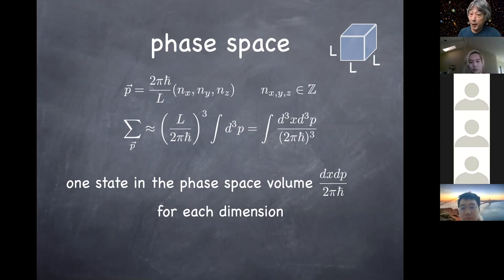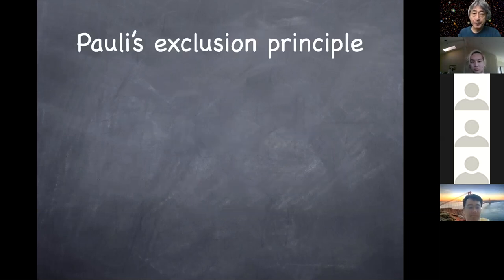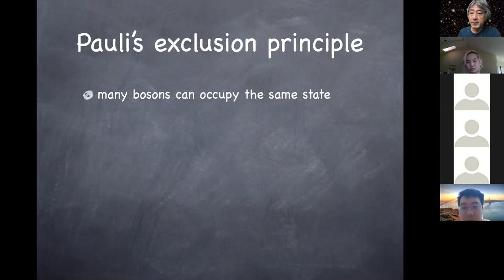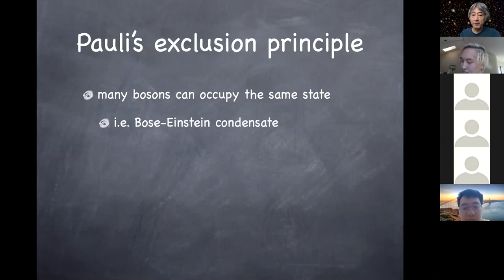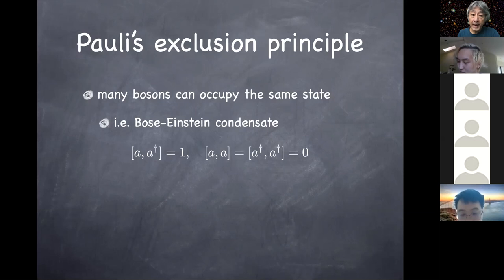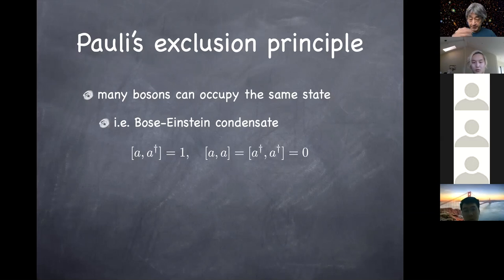Now we move to fermions. In the case of a fermion, they must satisfy Pauli's exclusion principle. A major difference between bosons and fermions is that many bosons can occupy the same state — as you saw dramatically in Bose-Einstein condensate. That's because of the commutation relation between a and a-dagger: a and a-dagger satisfy this commutation relation, a's commute with each other, a-daggers commute with each other, so you can use the same a-dagger many times on the same state.